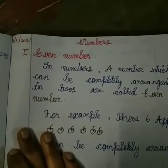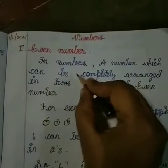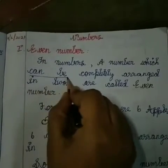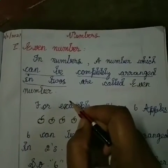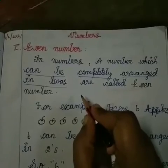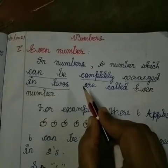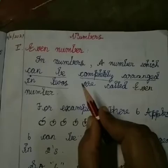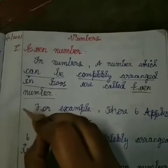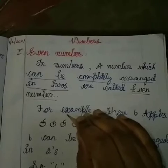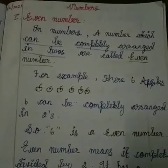In today's numbers lesson, the topic is even numbers. A number which can be completely arranged in twos — that means it can be completely divided by two with a remainder of zero only — is called an even number. An odd number cannot be completely arranged in twos, but an even number can be completely arranged in twos. That is the difference between odd and even.